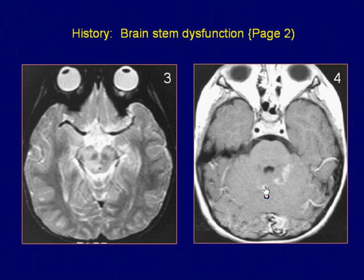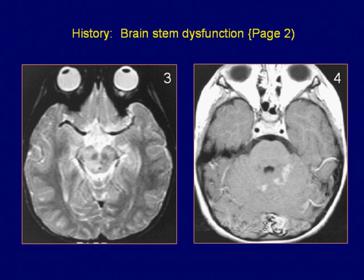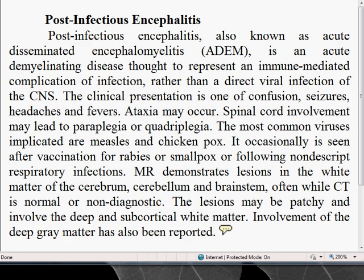Axial T1-weighted GAD at the level of the pons shows enhancing white matter lesions in the cerebellum. This is a case of post-infectious encephalitis.